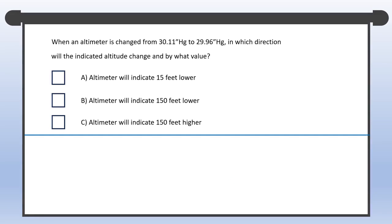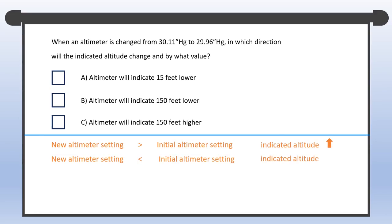Time for some math. When an altimeter is changed from 30.11 inches of mercury to 29.96 inches of mercury. In which direction will the indicated altitude change? And by what value? Don't break a sweat just yet. First, let's determine the direction of change. Compare the two settings. If the new setting has a larger number than the initial one, the indicated altitude will rise. Otherwise, it drops. That is, they move in the same direction. Since 29.96 is smaller than 30.11, the new reading is lower.